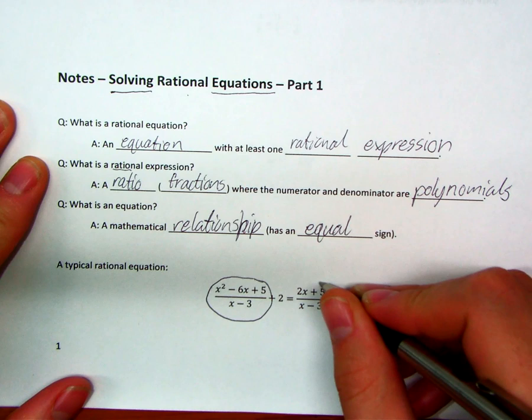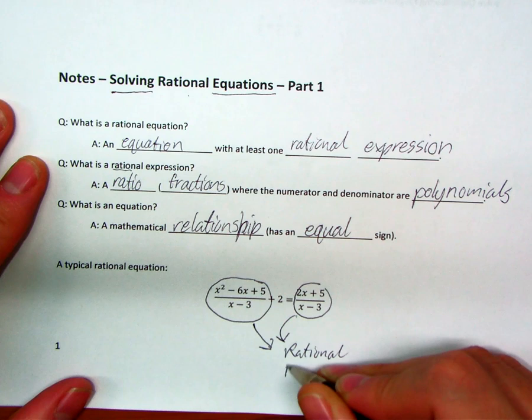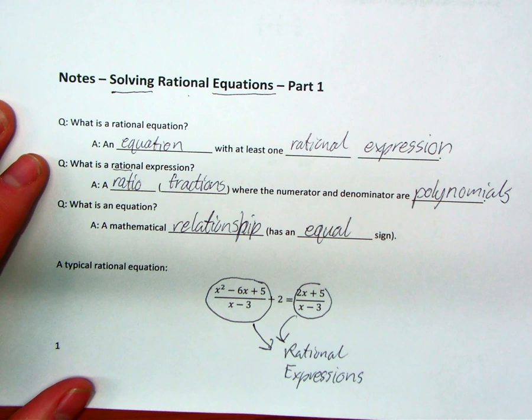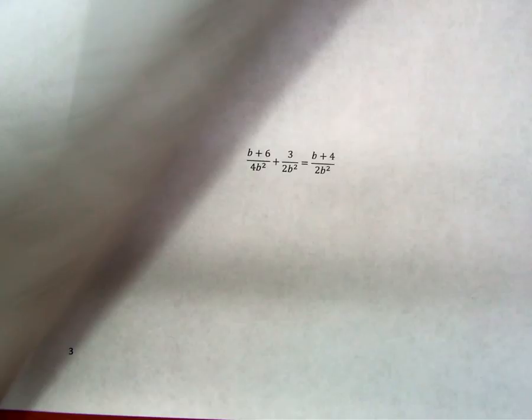So here's a typical rational equation. Let's label some of the parts that are relevant. So we need at least one rational expression. Here we've got two. These are both rational expressions. Now, we also have an equal sign, which means we're dealing with an equation. So it's an equation with rational expressions. This is a rational equation.